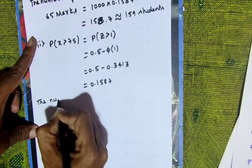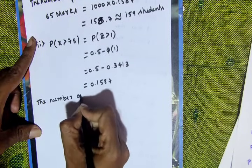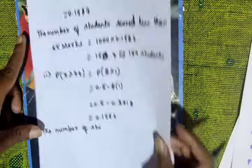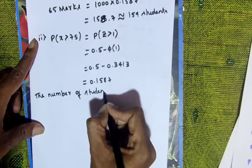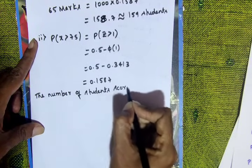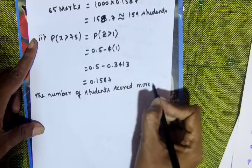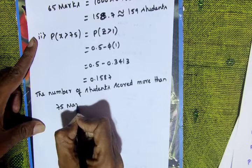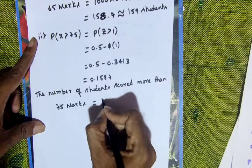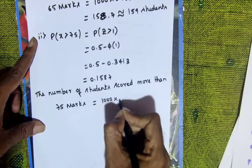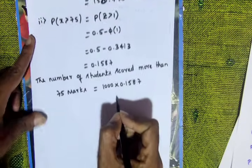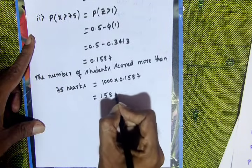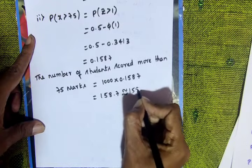The number of students who scored more than 75 marks equals 1000 times 0.1587 equals 158.7, approximately 159 students.